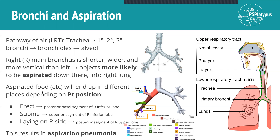Importantly, this isn't always consistent, but generally aspirated food will end up in different places depending on how the patient is positioned — how they're sitting or standing. If they're sitting or standing up with their thorax erect, then an aspirated object is most likely to go down to the posterior basal segment of the right inferior lobe. If they're supine or lying on their back, it's most likely to go to the superior segment of the right inferior lobe. And if they're lying on their right-hand side, it's most likely to go to the posterior segment of the right upper lobe. You don't need to know all of these segments, but it's good to remember these three, especially for classic multiple choice questions.